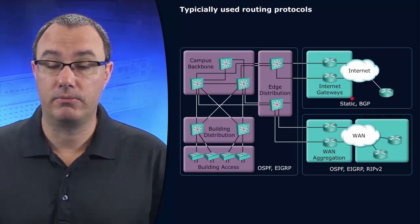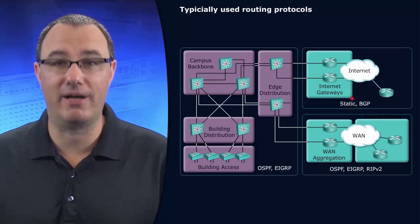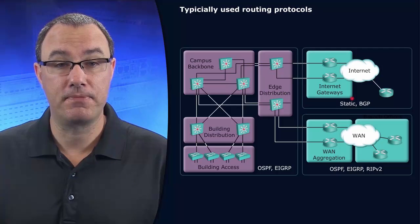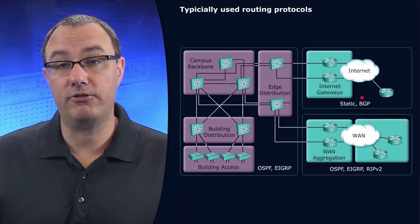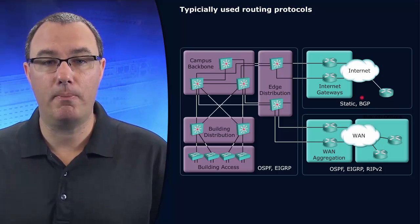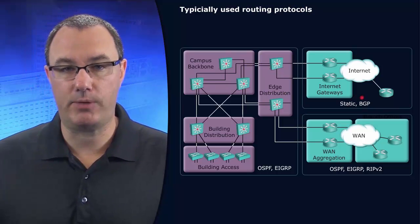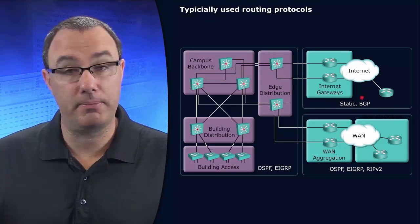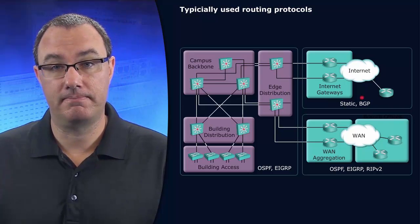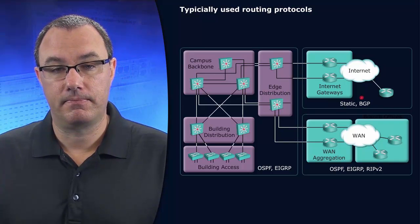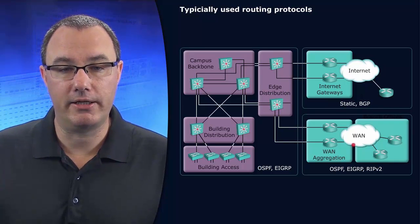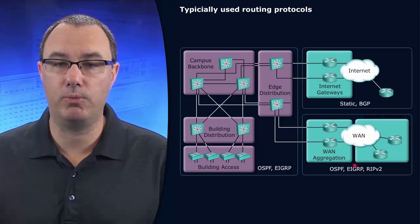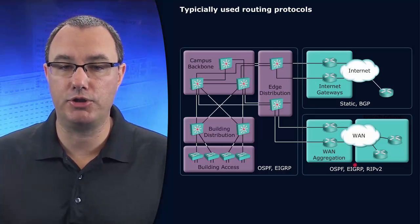Where we have connectivity to the internet, if you can get by with static routing, please do so. But in many cases, you need border gateway protocol to manipulate policy. And then for WAN connectivity, certainly OSPF and EIGRP would be our primary choices.